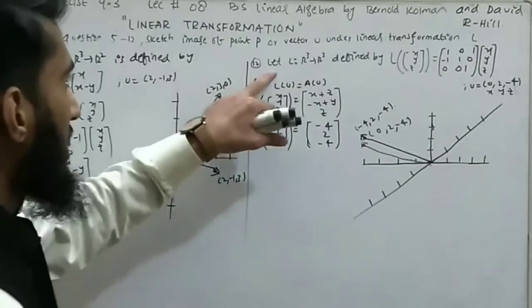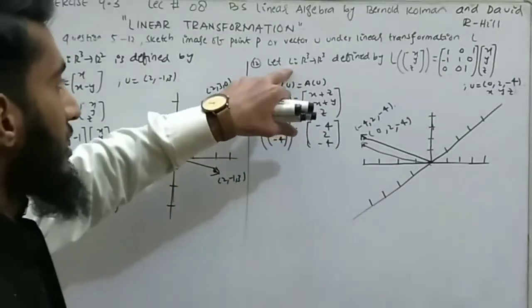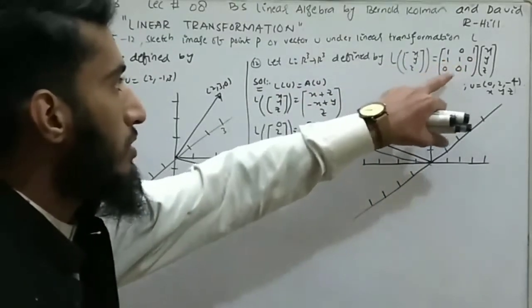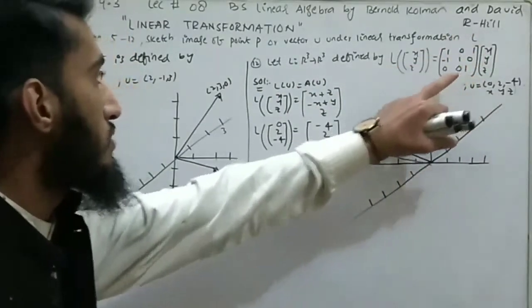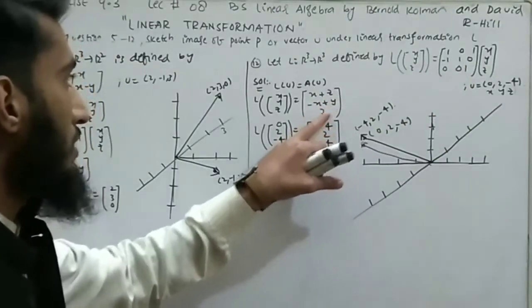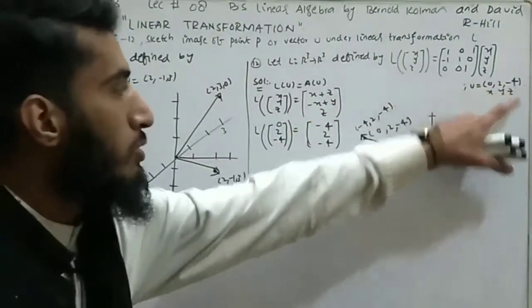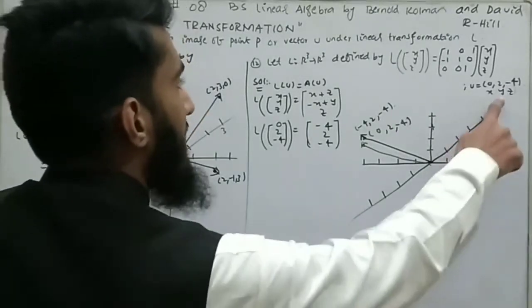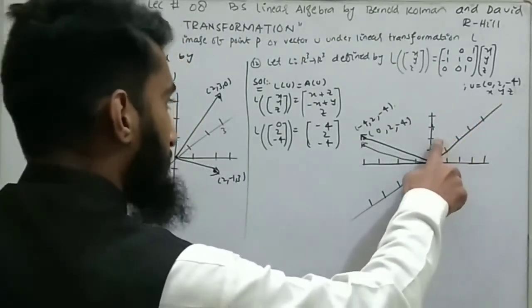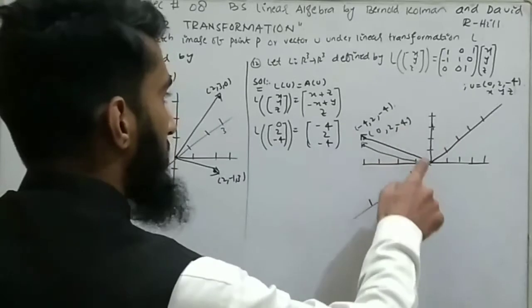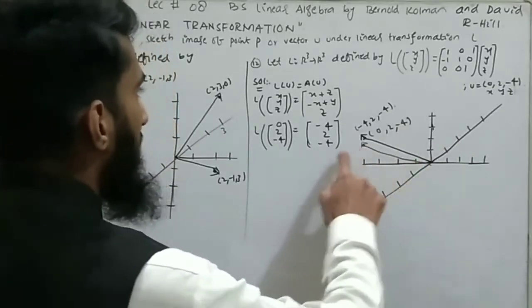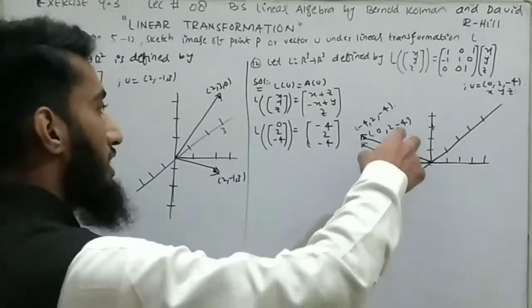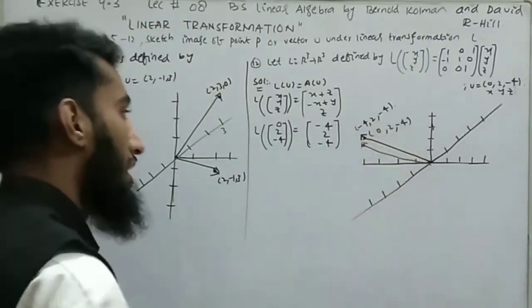Question 12: L from R³ to R³ defined by L(x,y,z) = [[1,0,1],[-1,1,0],[0,0,1]] · (x,y,z). Multiplying gives (x+z, -x+y, z). For initial point (0, 2, -4), the required image is (-4, 2, -4). Both points are plotted, showing a counterclockwise rotation through some positive degree.